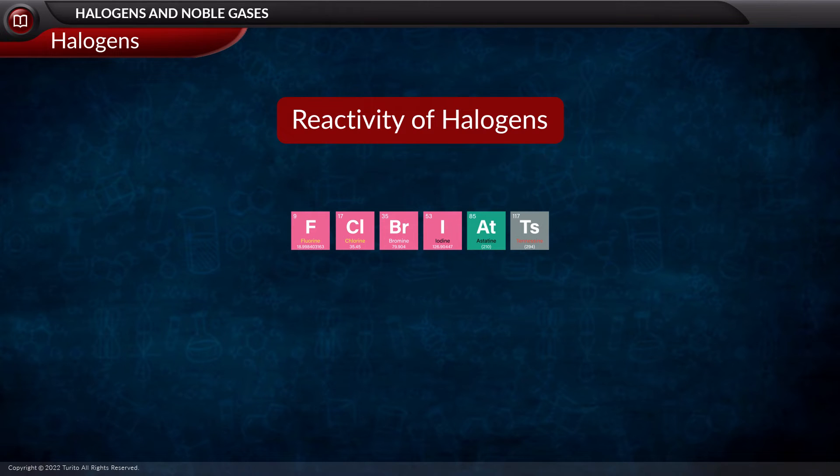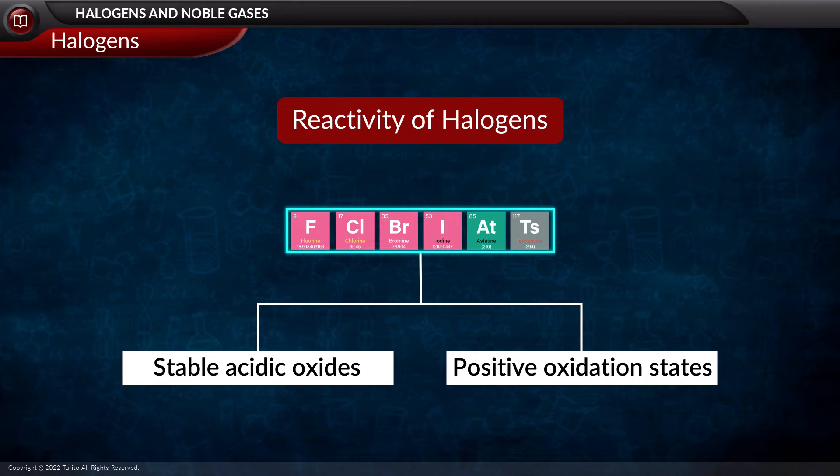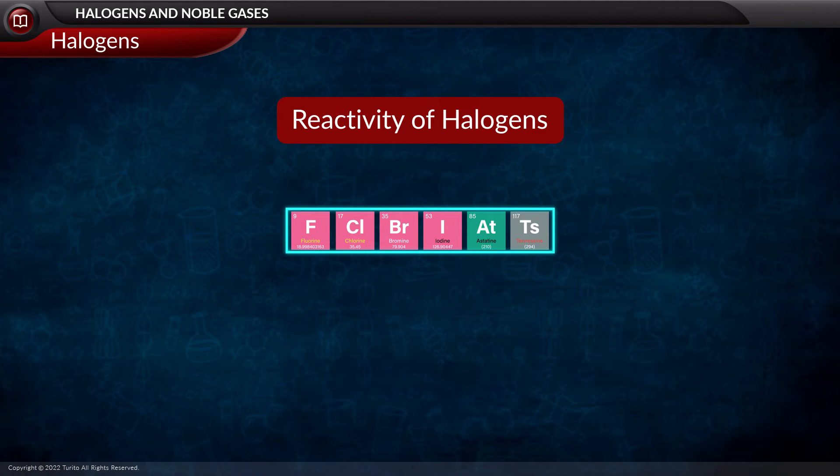Let us now speak about the reactivity of halogens. The reactivity of the halogens decreases as we move down the group. All halogens can form stable acidic oxides and can acquire positive oxidation states in their compounds easily, but there is an exceptional case and that is of fluorine. The exceptional case of fluorine is attributed to its small size and population of as many as nine electrons in that space.